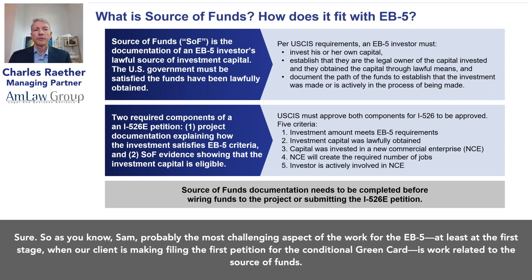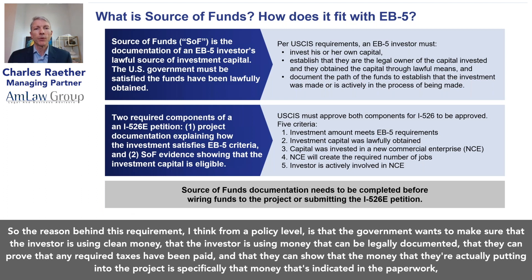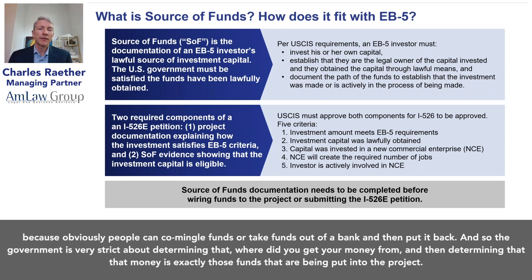Probably the most challenging aspect of the EB5 work, at least at the first stage when the client is filing their first petition for the conditional green card, is work related to the source of funds. The reason behind this requirement, from a policy level, is that the government wants to make sure the investor is using clean money — money that can be legally documented, that required taxes have been paid, and that the money actually being put into the project is specifically that money indicated in the paperwork.